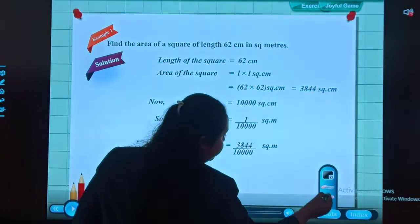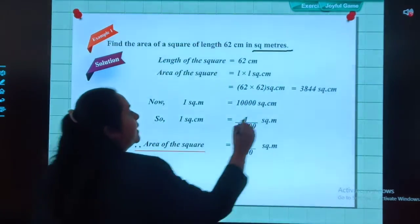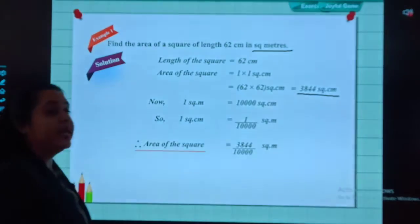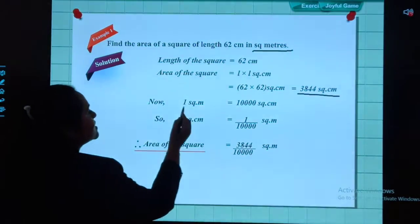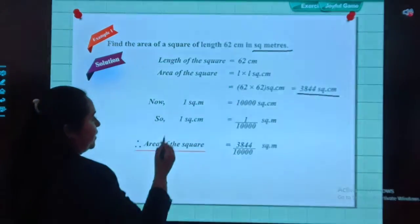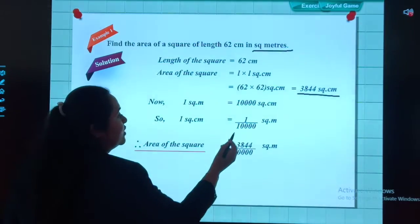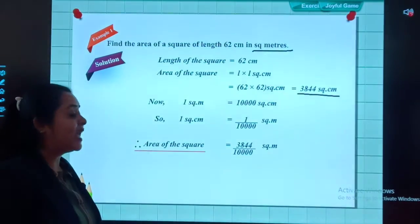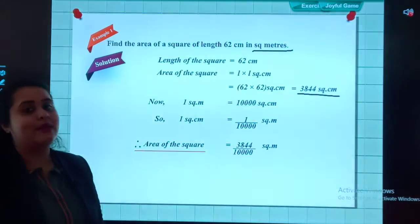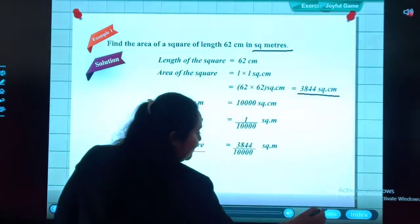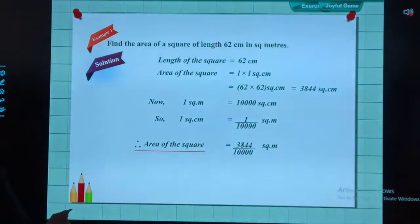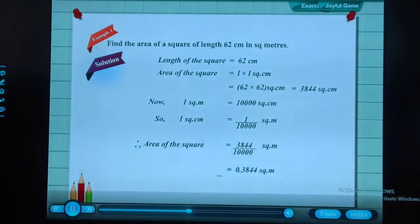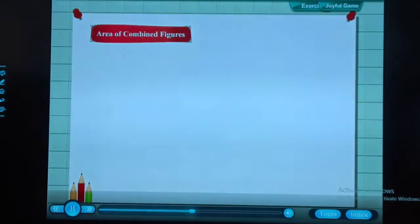So for that reason, first I found the answer in centimeters, then I converted it. 1 square meter equals 10,000 square centimeter. So 1 square centimeter will be 1/10,000 square meter. My answer will be area of square equals 3844/10,000 square meter, which equals 0.3844 square meter. Thus, the area of the square is 0.3844 square meter.